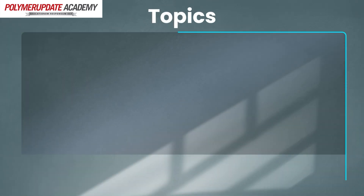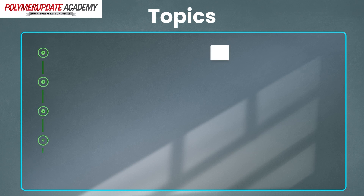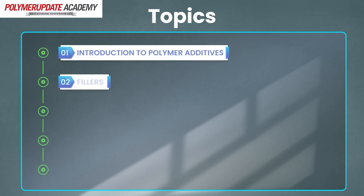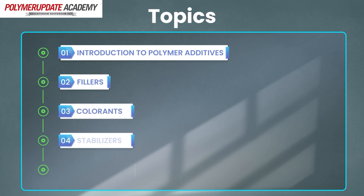Fundamentals of Polymer Additives is the first course in the series on Polymer Additives and Compounding. The broad topics that we have covered in the five lecture training course are introduction to polymer additives, fillers, stabilizing and functional additives such as colorants, stabilizers and process aids.